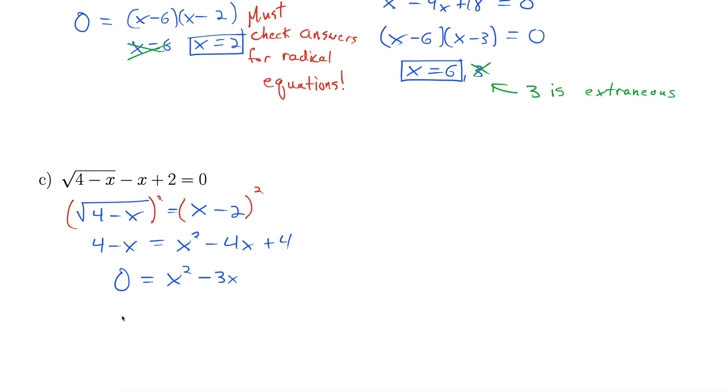We can solve this. We factor out the greatest common factor. It happens to be x. That leaves us with x and x minus 3. Then we set each one of these factors equal to 0. That gives x equals 0 and x equals 3.